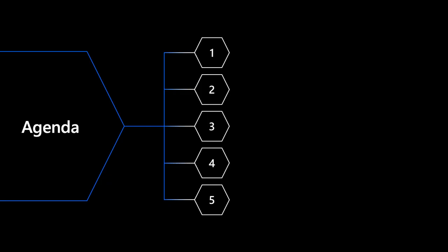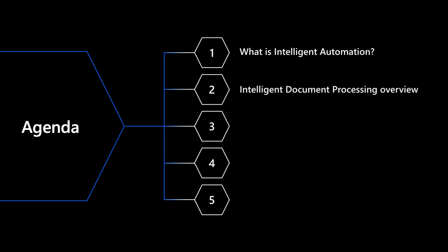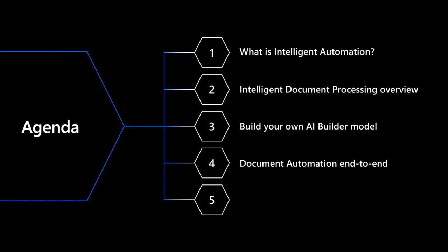We'll be covering five different talking points in this session. First, we'll give you an overview of what we call Intelligent Automation, recapping the different sets of AI-driven scenarios that you can automate with AI Builder. We'll also show you the Intelligent Document Processing landscape, the different features supported today, how to create your own custom document processing model, how to use your model in an end-to-end process, and we'll go over common use cases and benefits.